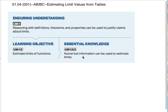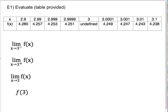Okay, this is AP AB and BC Calc. We are doing Unit 1, Section 4, which is estimating limit values from tables. So that's basically what we're going to do. We're just going to do a bunch of estimating limits from tables.